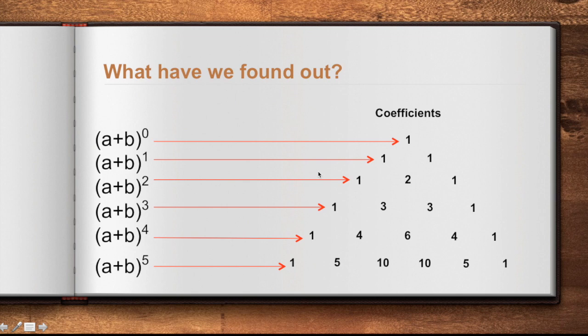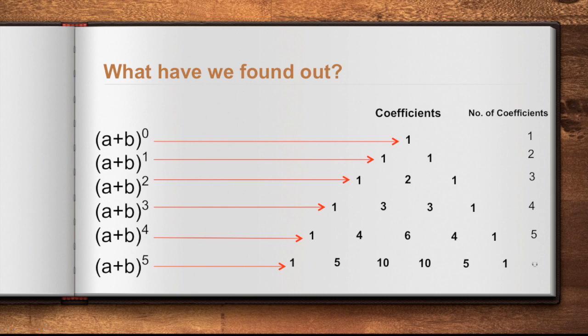Now, what else have we found out? If the index is 1, it gives you 2 coefficients. If the index is 2, it gives you 3 coefficients. We can identify this pattern: if the index is 0, there is 1 coefficient; if the index is 1, there are 2 coefficients. It follows that if the index is 5, it will give us 6 coefficients. This is very important information we can use when expanding binomials.